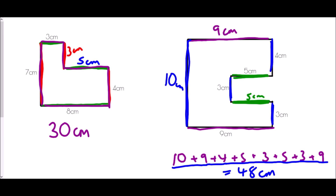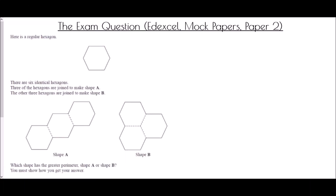Finally we come to the exam question from the Edexcel mock papers, paper two. It gives us a regular hexagon. There are six identical hexagons: three are joined to make Shape A, and the other three are joined to make Shape B. The question asks which shape has the greater perimeter and requires us to show our working. A regular hexagon means each of its sides is exactly the same length.